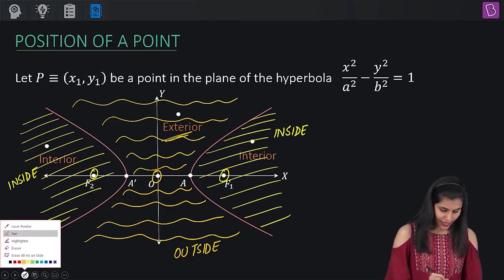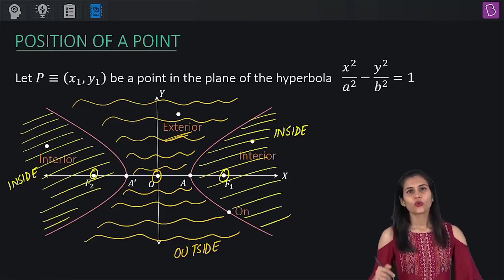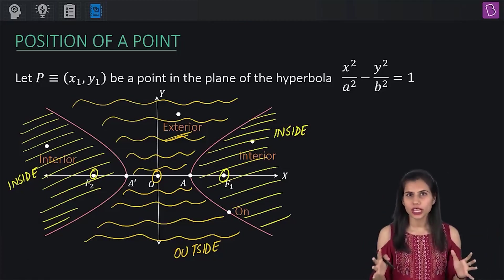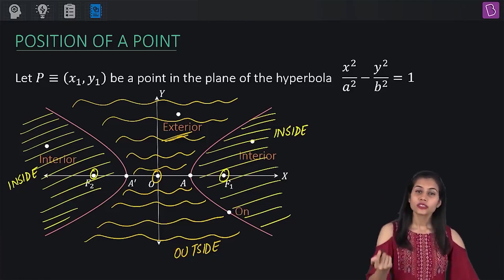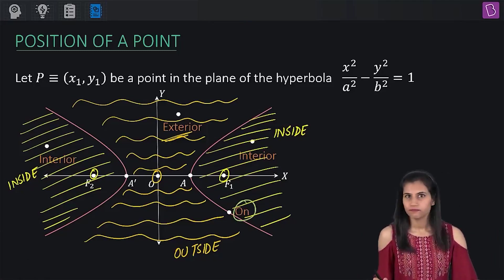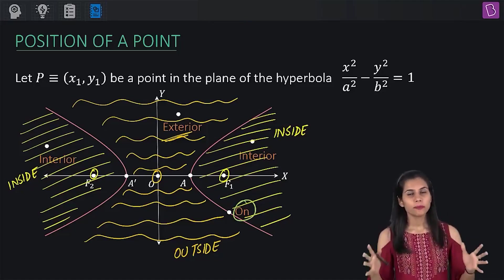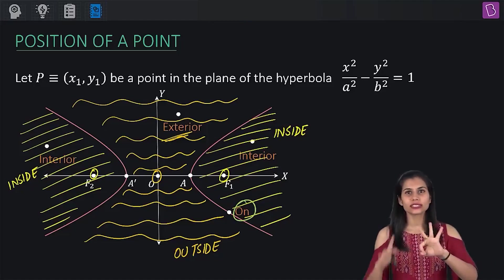Next, well needless to say the infinitely many points which are sitting on the two branches of this hyperbolic curve constitute the region on the hyperbola. That means my hyperbola is dividing the Cartesian plane into three distinct regions: inside, on, and outside.